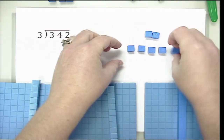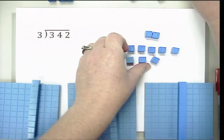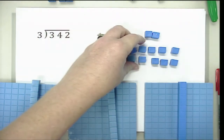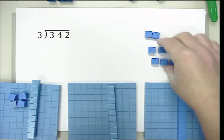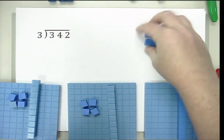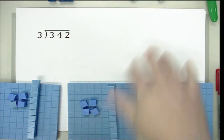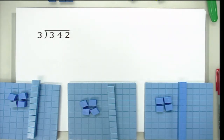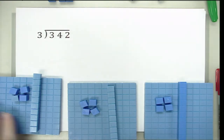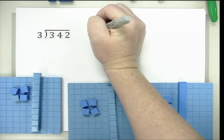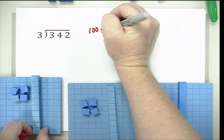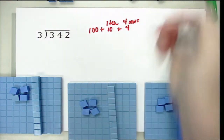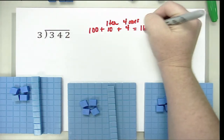So I am going to do some exchanging — I exchange my remaining ten for ten ones, giving me twelve ones total. Now I can easily put four ones in each group. If I had anything left over, that would be my remainder, which could be expressed as a fraction. So now I look at how many I have in each group — my quotient. It looks like I have a hundred plus one ten, which is ten, plus four ones, which is four. And my answer is one hundred plus ten plus four, equal to one hundred and fourteen.